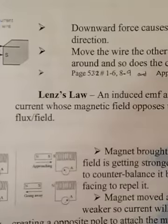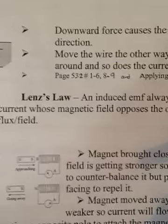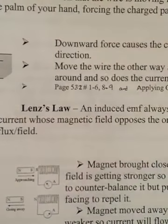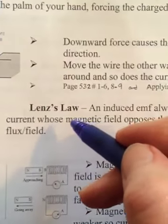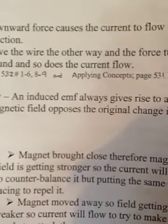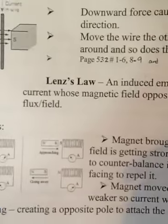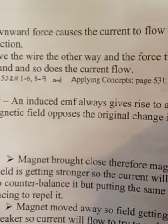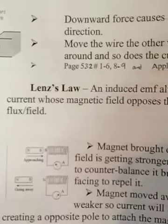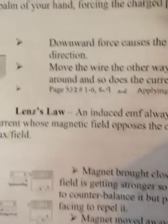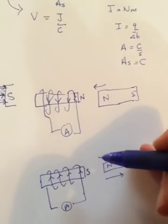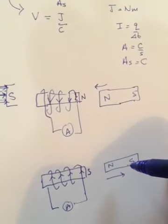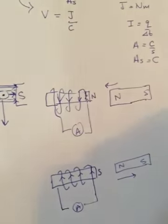And so then one last thing before we take a look at your homework questions. And that's something that's called Lenz's Law. And Lenz's Law is what I was just talking about. An induced EMF always gives rise to a current whose magnetic field opposes the original change in flux or in field. So it's back to the current flowing one way when we bring the north closer and then it turning around and flowing the other way when we move it away.